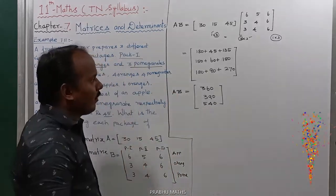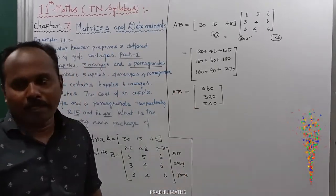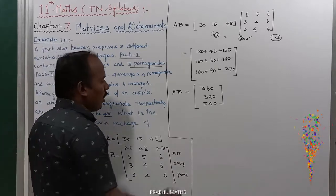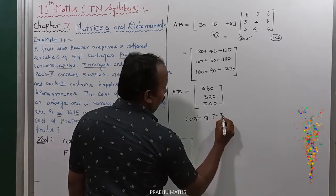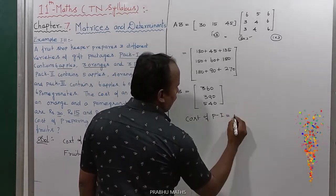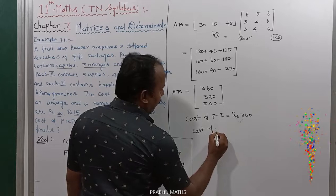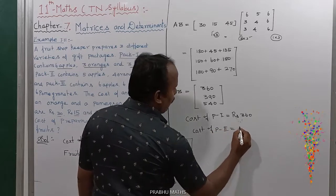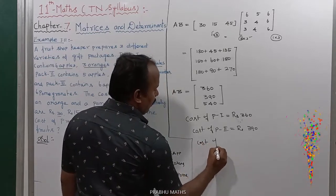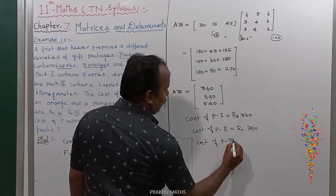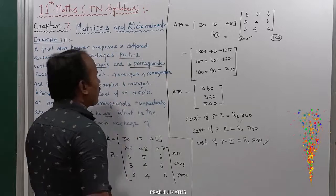The AB matrix gives the cost of each packet. Cost of packet number one is equal to 360 rupees. Cost of packet number two is equal to 390 rupees. Cost of packet number three is equal to 540 rupees. That is the answer.